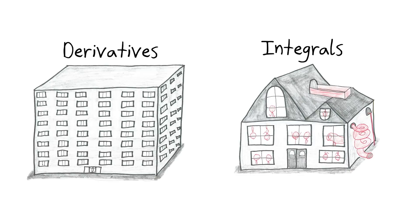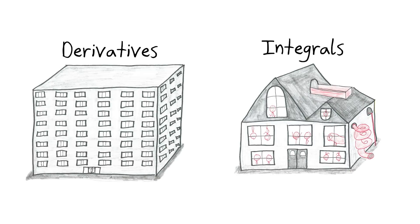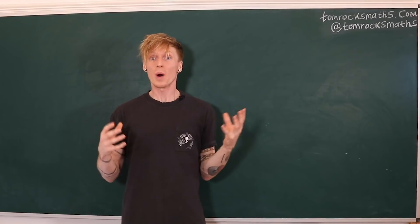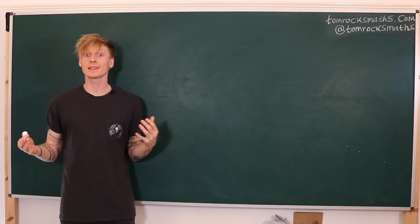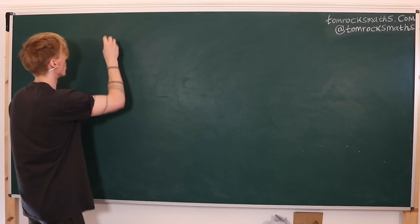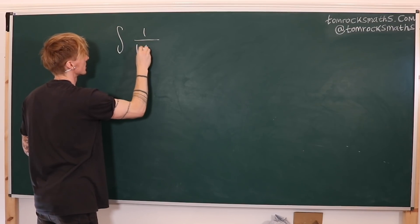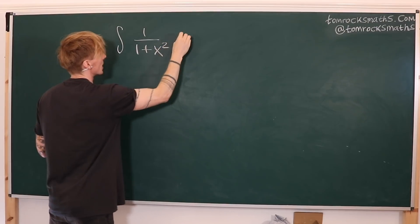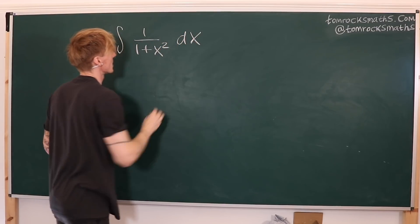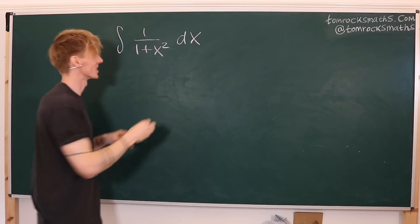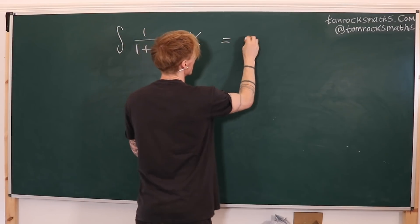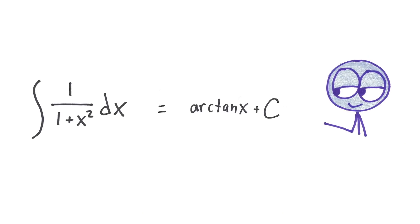Integrals on the other hand are more like a funhouse, with each room throwing up its own surprise, and requiring its own map or technique in order to get through. Let's take the example of 1 over 1 plus x squared. Now this you may recognise is a known integral, the answer is a known function, and is equal to arctan x plus c.